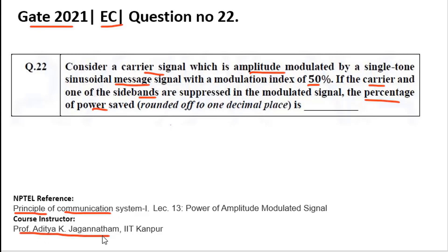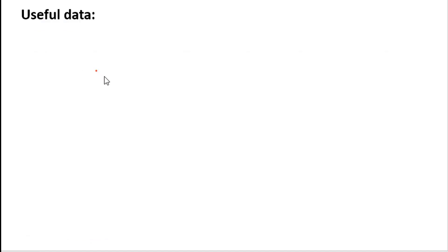Communication System by Professor Aditya Jaganathan. The useful data for this question: if you have a message signal m(t) = Am cos(ωm t) and carrier signal c(t) = Ac cos(ωc t), where ωm is the frequency of the message signal and ωc is the frequency of the carrier signal.